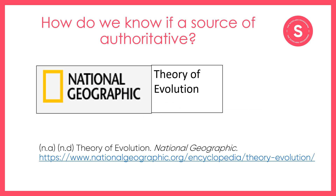Next you may come across an article from The National Geographic. The National Geographic is a magazine that publishes articles about geography, natural history and world culture. It has a good reputation and is known to publish scientific articles that follow the scientific method and are unbiased. It publishes articles written by experts, so we can trust the information we read in it.